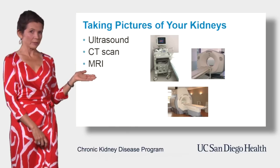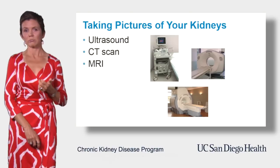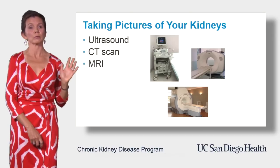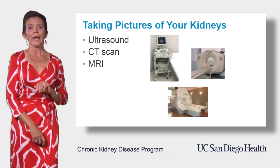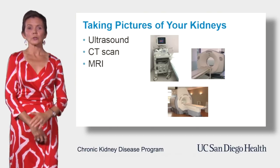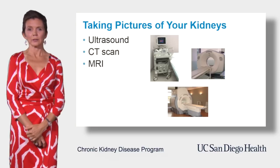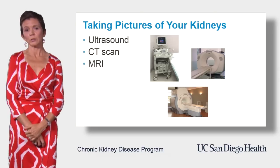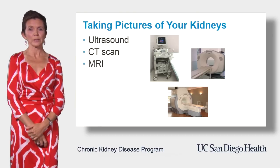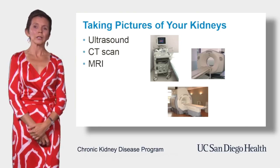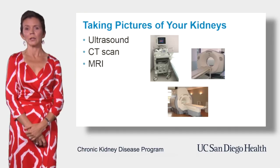Besides checking blood and urine tests, your nephrologist will likely want to have a picture of your kidneys. This is done to make sure that you have two kidneys — yes, some people are born with just one kidney and don't know about it. We also want to make sure that there is no obstruction or abnormal cysts in your kidneys. Depending on your situation, you might be asked to do either a kidney ultrasound, or more sophisticated tests like a CT scan or even an MRI.